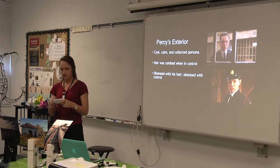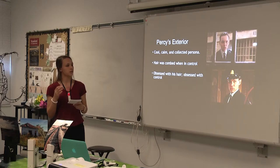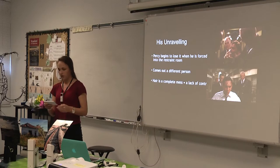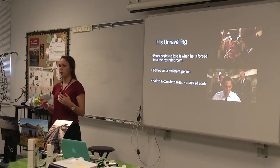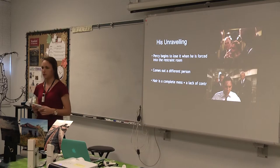Percy appears tough and collected on the outside, but he is really unraveling. His hair is always perfectly combed and groomed, and in my opinion, this is a form of control — his hair is perfectly groomed when he is in control of the situation. The audience begins to see Percy fall apart once he is forced into the restraint room. He enters and comes out a different person: more wild and untamed, belittled and disheveled. His hair is in complete disarray, which symbolizes his lack of control because he can no longer control the situation.